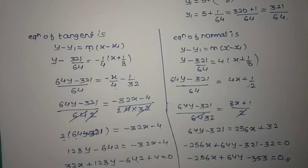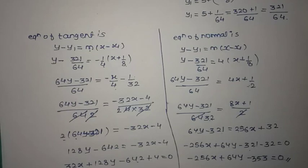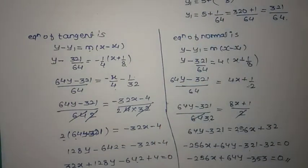So this is all about practice set 4.1. We had the slope of normal and slope of tangent, found x1 and y1, and derived both equations. We will stop over here.